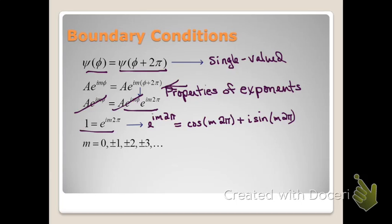Using Euler's relation, we can make the substitution: e to the i m 2π equals cosine of m 2π plus i sine of m 2π. This equals 1 only when the first term equals 1 and the second imaginary term equals 0. This happens when m is equal to an integer. When m is an integer, cosine of integer times 2π is always 1, and i sine of m 2π is always 0.